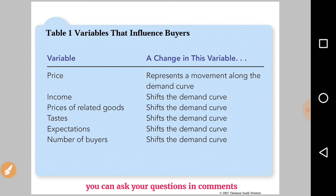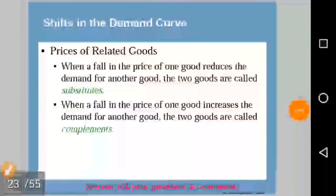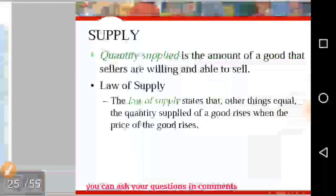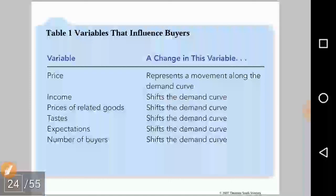This table summarizes how changes in various variables lead to changes in demand. If there is a change in the price of the own good, it represents a movement along the same demand curve. Changes in income, price of related goods, tastes and preferences, future expectations, and number of buyers all lead to a shift in the demand curve. This was a basic introduction to demand and its related concepts; the next video will continue with supply and its related concepts.